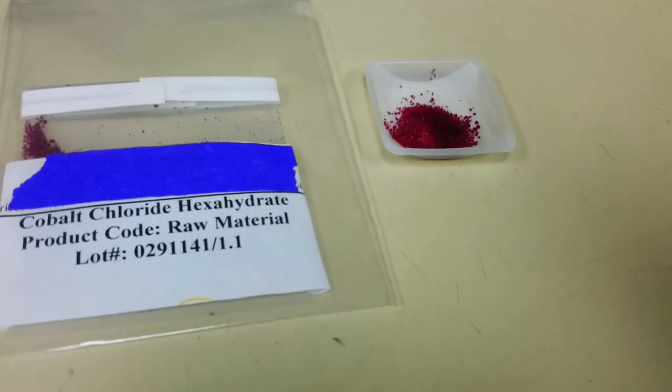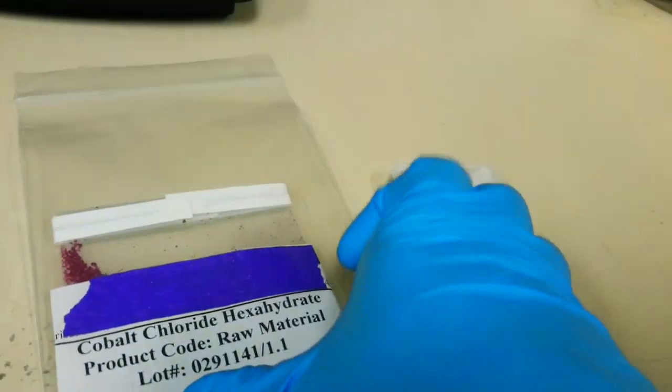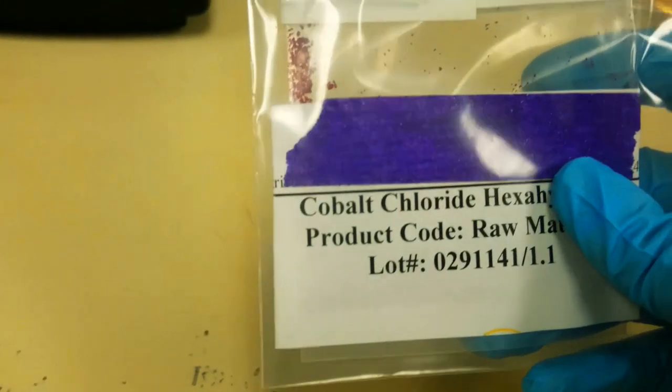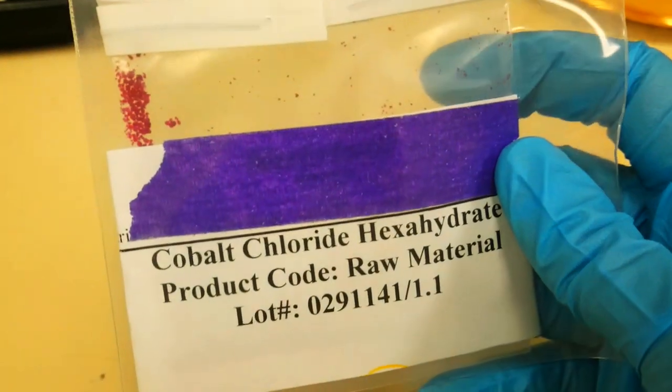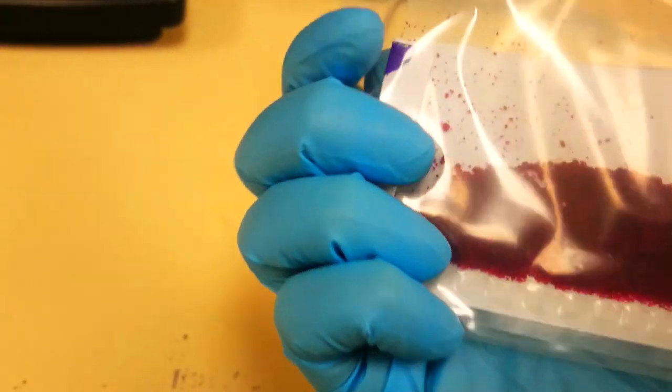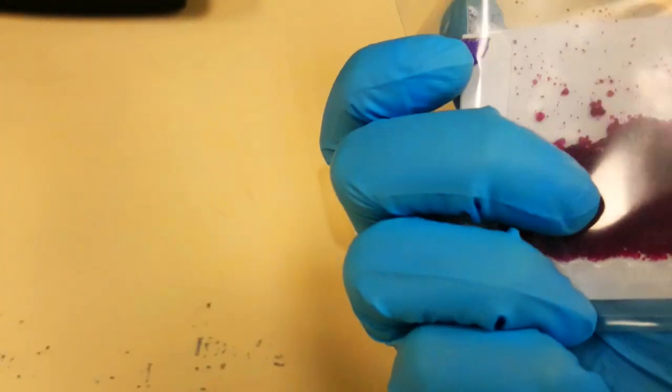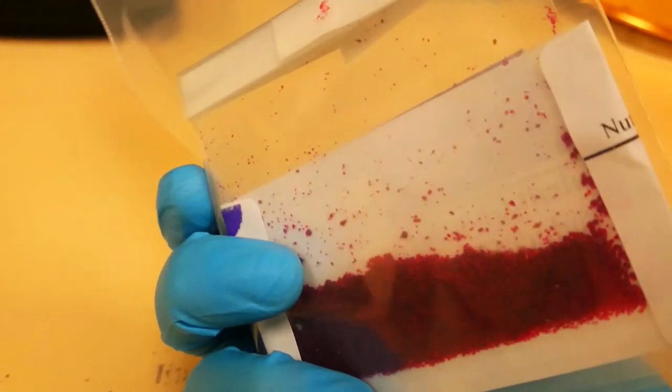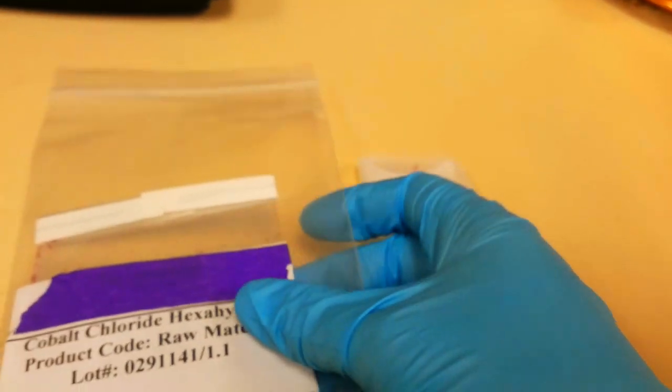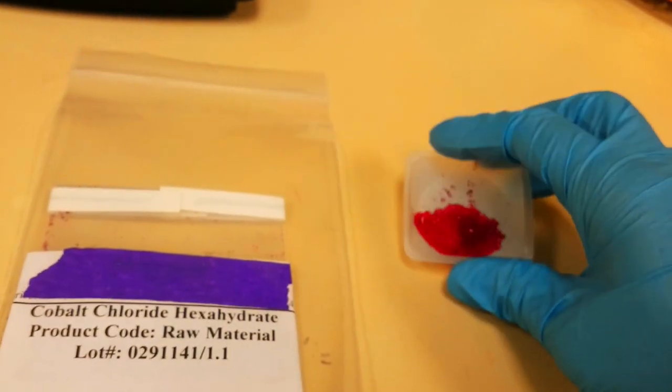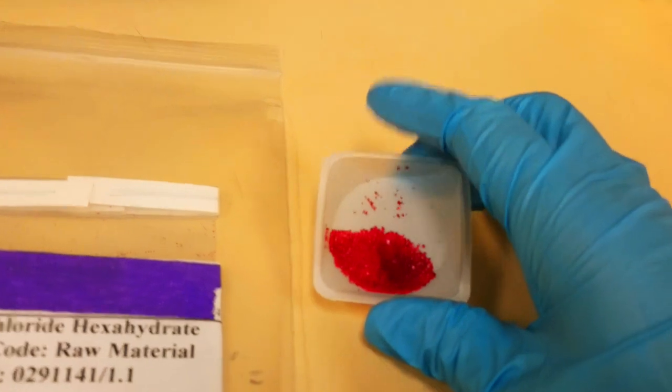This other material is a cobalt chloride hexahydrate. This one is crystalline granules. It's a lovely pink color.